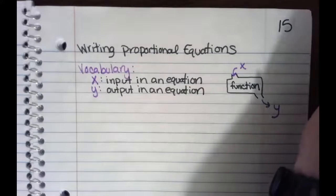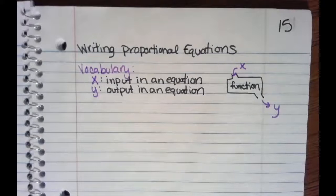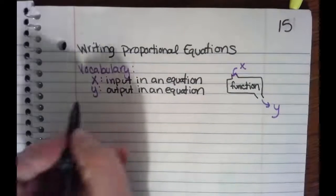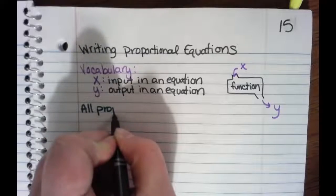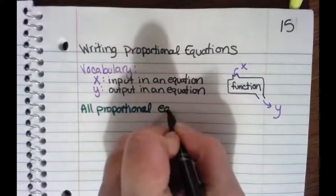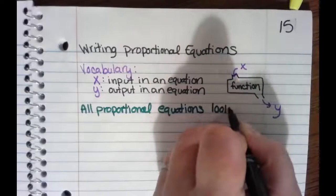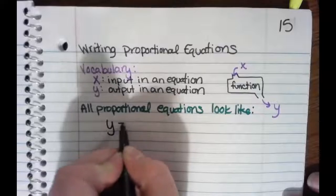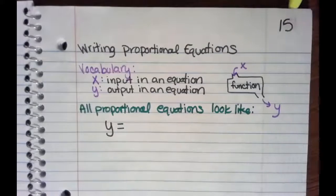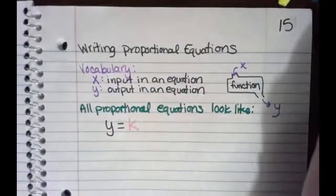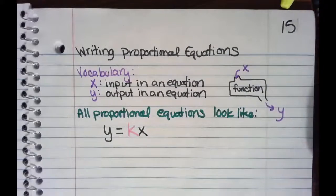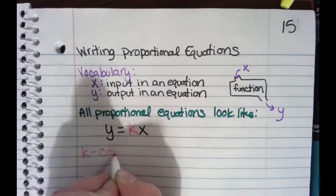All proportional relationships look a certain way. All proportional relationships or proportional equations look like this: Y equals K times X. K is going to be your constant of proportionality.